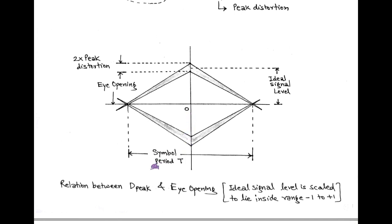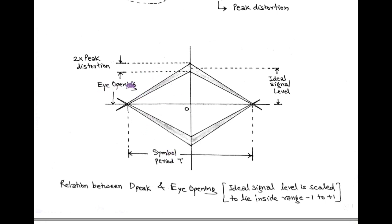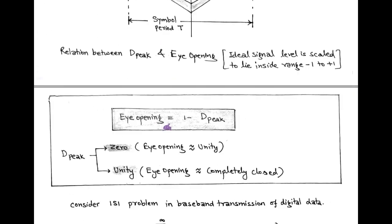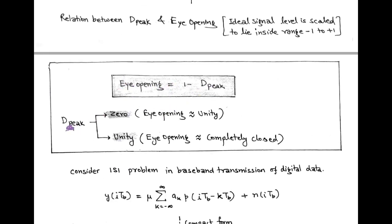In this figure, the ideal signal level is scaled to lie in the range −1 to +1. The width of eye opening represents the symbol period T, and the corresponding height represents the noise margin, that is, the eye opening. The peak distortion is measured twice — for positive and negative levels. Using the relation Eye Opening = 1 − Peak Distortion: when peak distortion equals 0, eye opening is unity, which is the case of zero inter-symbol interference; and when peak distortion equals 1, the eye is completely closed, which is the case of severe inter-symbol interference.